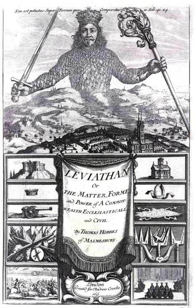Although state forms existed before the rise of the ancient Greek Empire, the Greeks were the first people known to have explicitly formulated a political philosophy of the state, and to have rationally analyzed political institutions. Prior to this, states were described and justified in terms of religious myths. Several important political innovations of classical antiquity came from the Greek city-states and the Roman Republic. The Greek city-states before the 4th century granted citizenship rights to their free population, and in Athens these rights were combined with a directly democratic form of government that was to have a long afterlife in political thought and history.